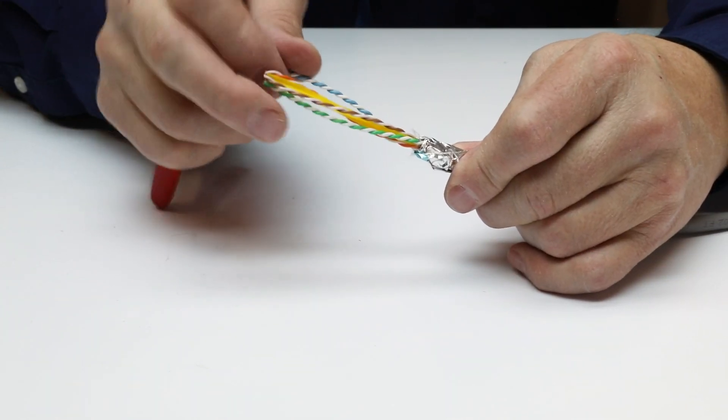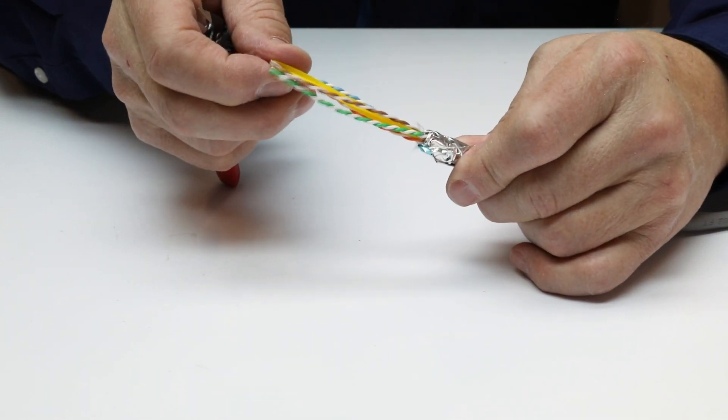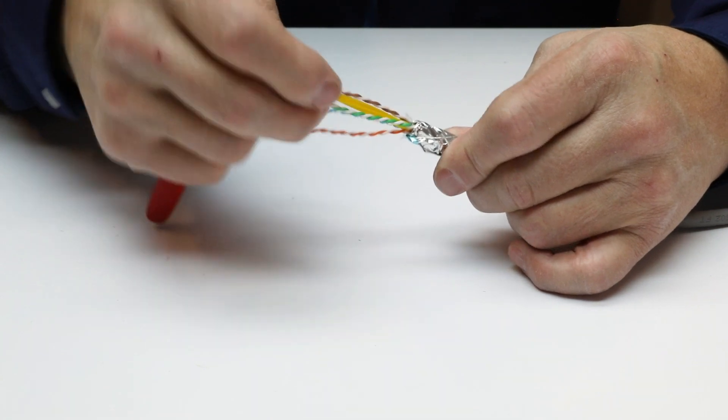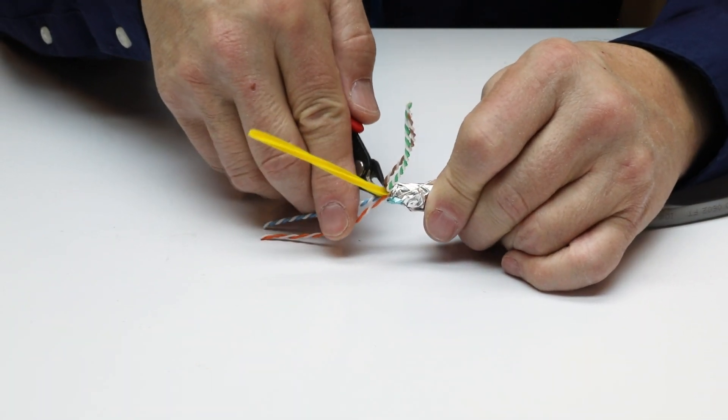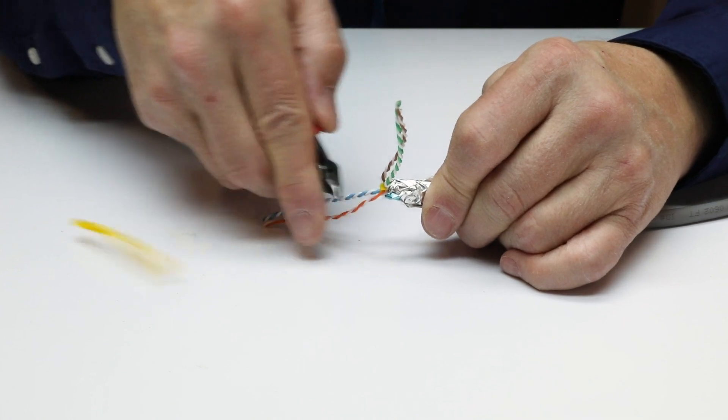Remove the cable center spline taking care not to damage pairs, foil, or drain wire. Other shielded twisted pair cables may have different constructions but cable preparation will be similar.